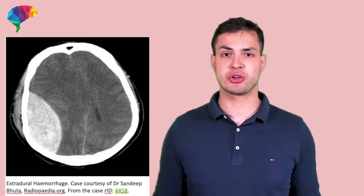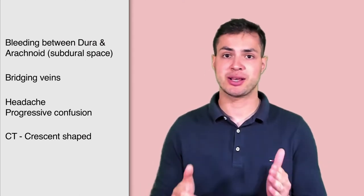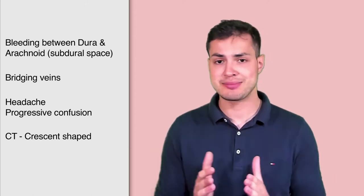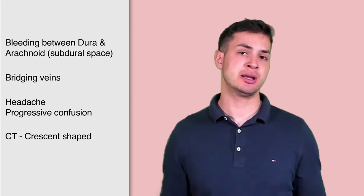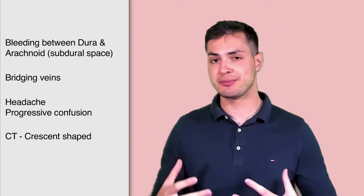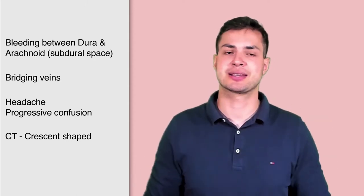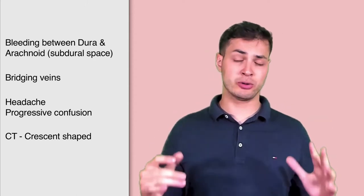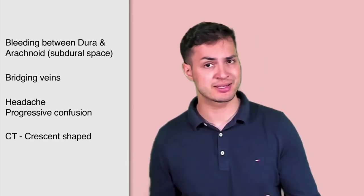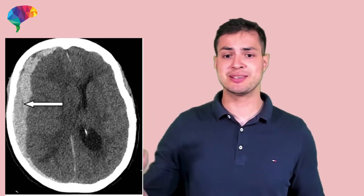The second condition is subdural hemorrhage, which occurs between the arachnoid and the dura — the subdural space. This space shouldn't exist in young people, but as the brain atrophies with age, that space is created. Weak bridging veins form, and even minor trauma like shaking your head at the hairdresser can cause bleeding. The history is usually chronic, though acute subdural hemorrhages do occur. Patients present with progressive memory loss, confusion, or headaches. A CT scan will show a crescent-shaped hemorrhage.